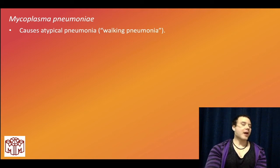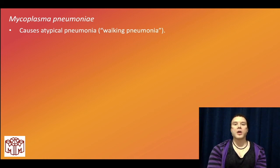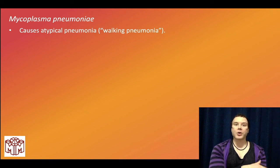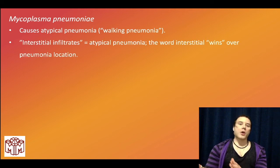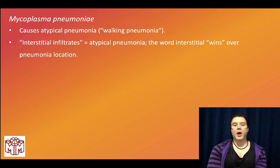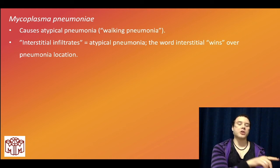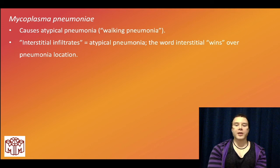Mycoplasma pneumoniae — not Mycobacterium — causes atypical walking pneumonia. This refers to a chest X-ray that shows bilateral infiltrates while the patient has a fever of 101 but is walking around as if otherwise fine. USMLE implies atypical pneumonia by saying interstitial infiltrates. I write that the word 'interstitial' wins over the pneumonia location.